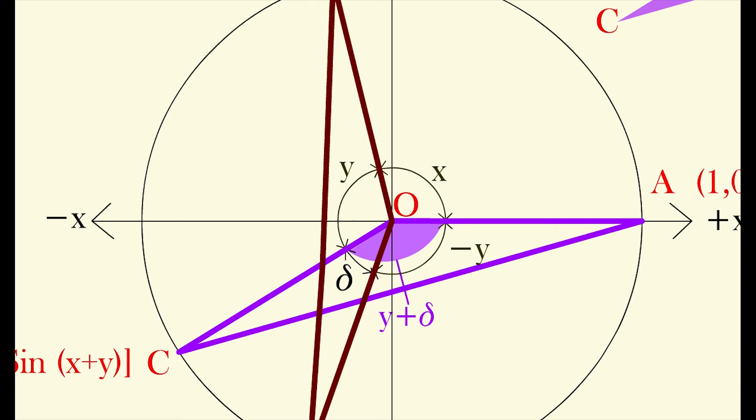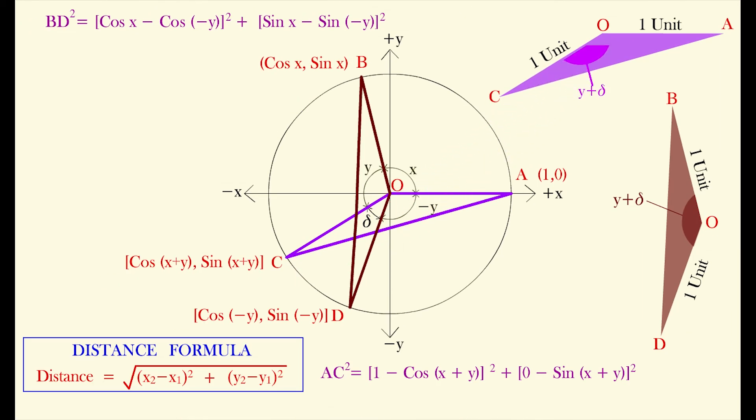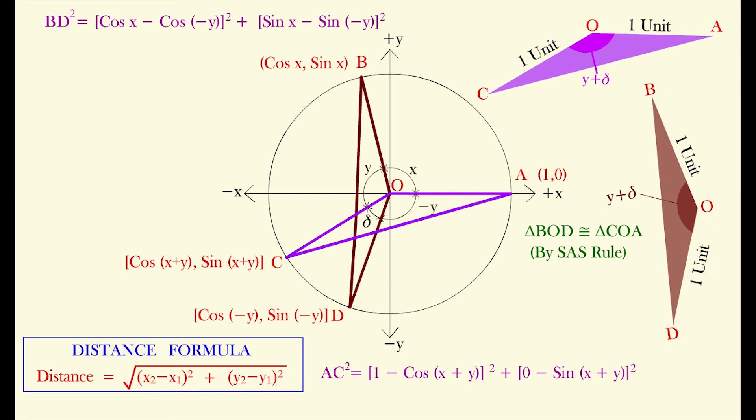Don't be confused with the negative sign on y. It is basically due to rotation in opposite direction. Otherwise the angle is y degree only. So on observing both the triangle, we see that angle AOC and angle BOD both are equal. That is y plus delta. And the two sides of both the triangle are also equal. That is 1 unit. If we apply the SAS rule, that is side angle side rule, this is part of geometry. We can say both the triangles are congruent triangles.